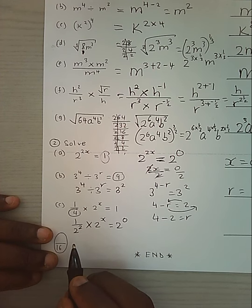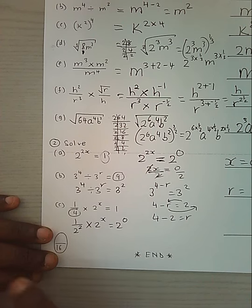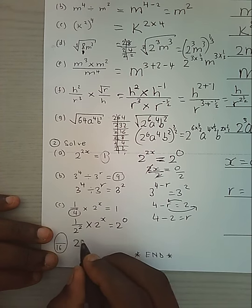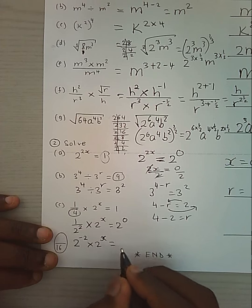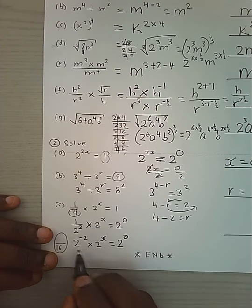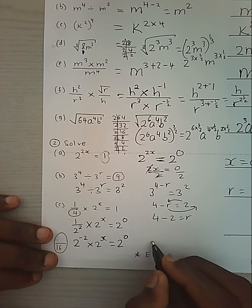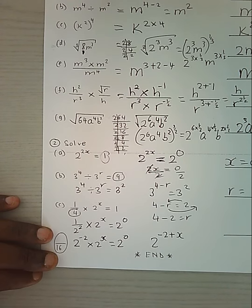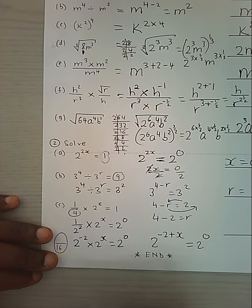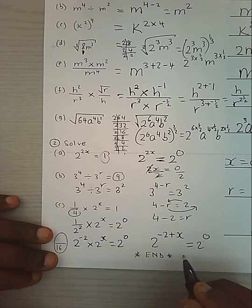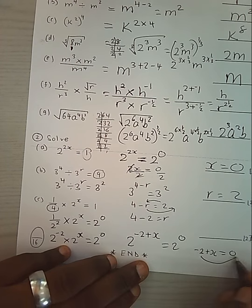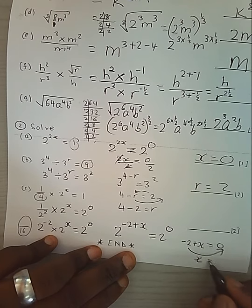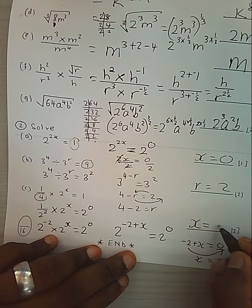Finally, we have base 4 which we change to 2 power 2, and 1 becomes 2 power 0. We bring the terms from the denominator up, changing the sign of the power. After ordering the powers, this equals 2 power 0, and since the bases are the same the powers must be equal, giving us x equals 2.